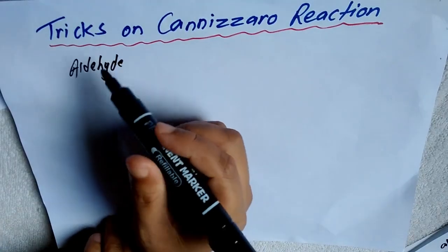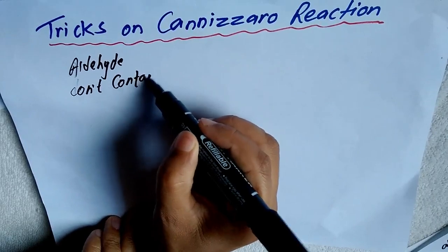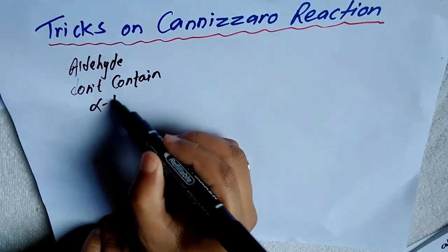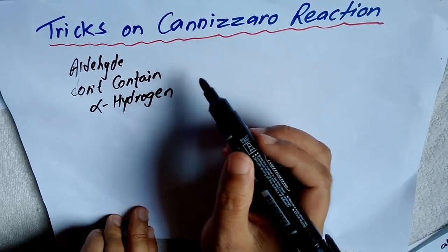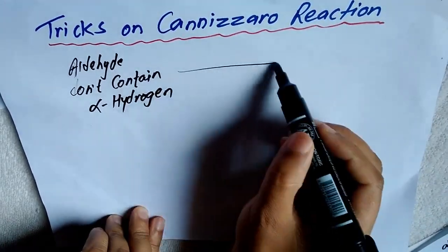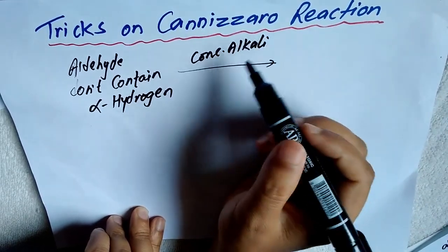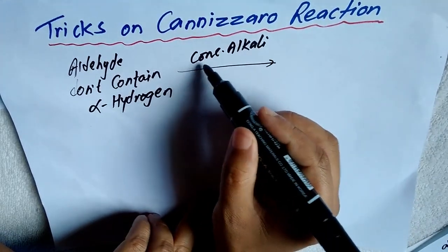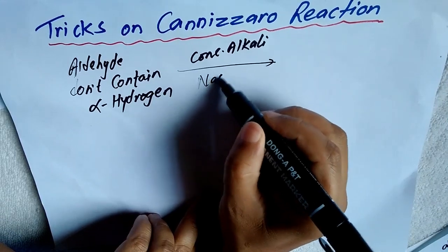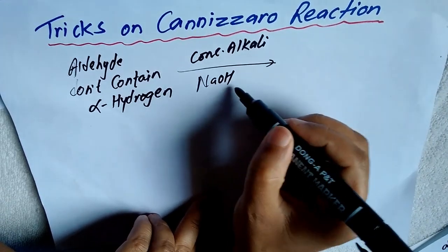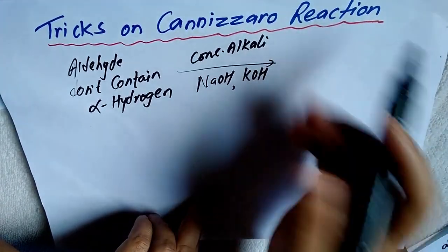Aldehydes which do not contain alpha hydrogen, when treated with concentrated alkali like NaOH or KOH solution, undergo disproportionation reaction.